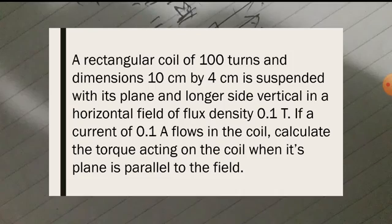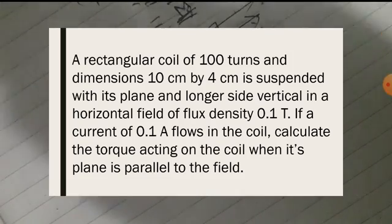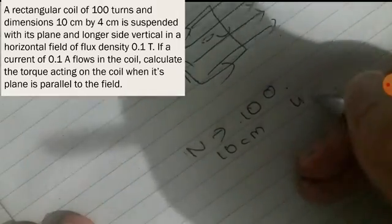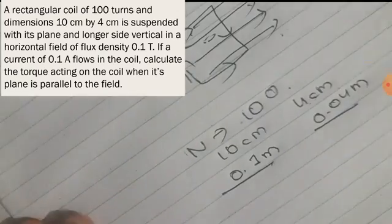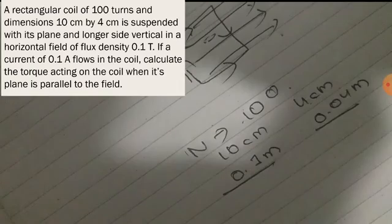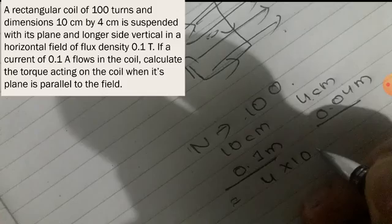Let's try a question: a rectangular coil of 100 turns with dimensions 10 cm by 4 cm. So N = 100, area = 0.1 × 0.04 = 4 × 10⁻³ m². B = 0.1 tesla. Current = 0.1 ampere.